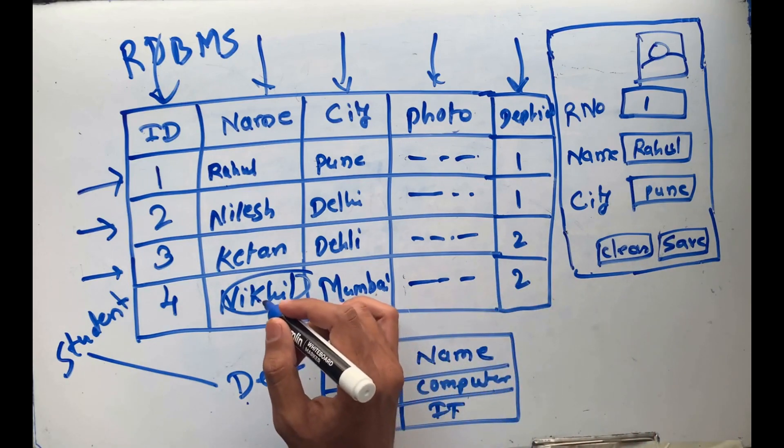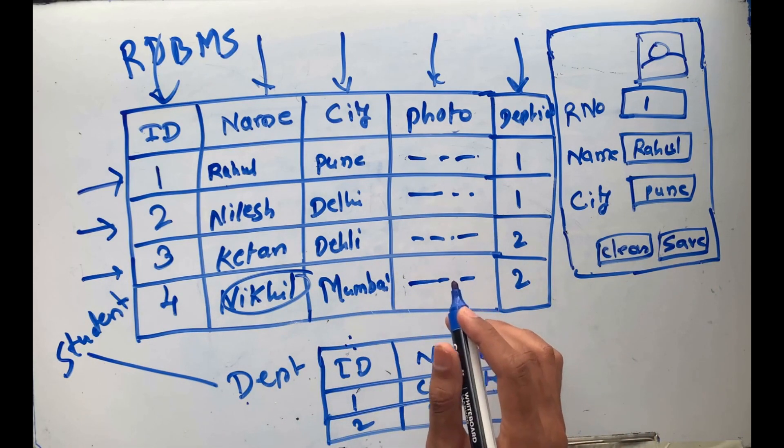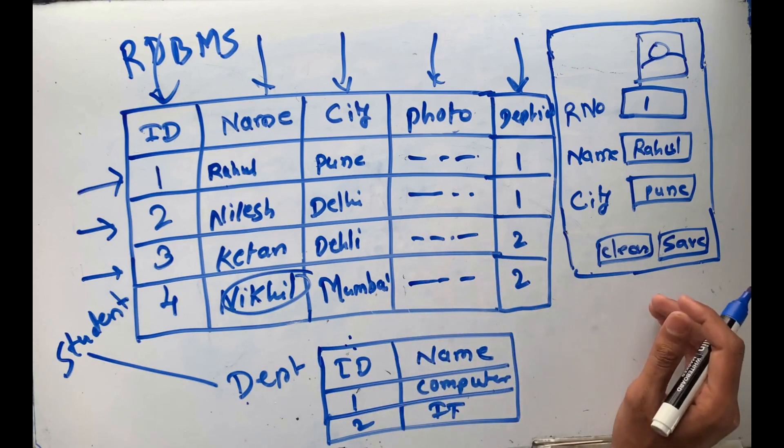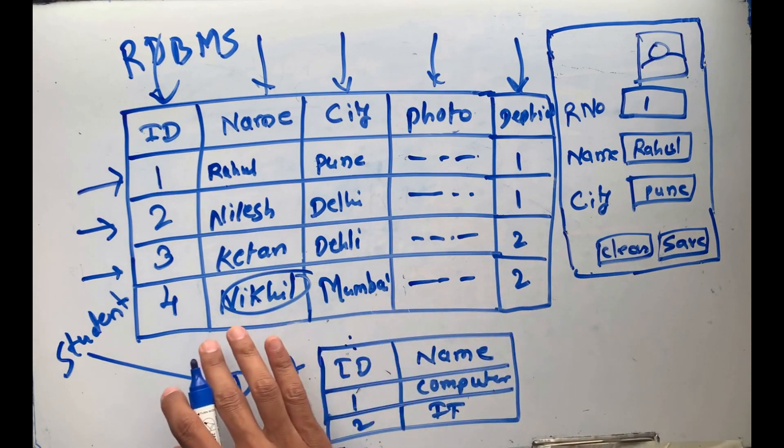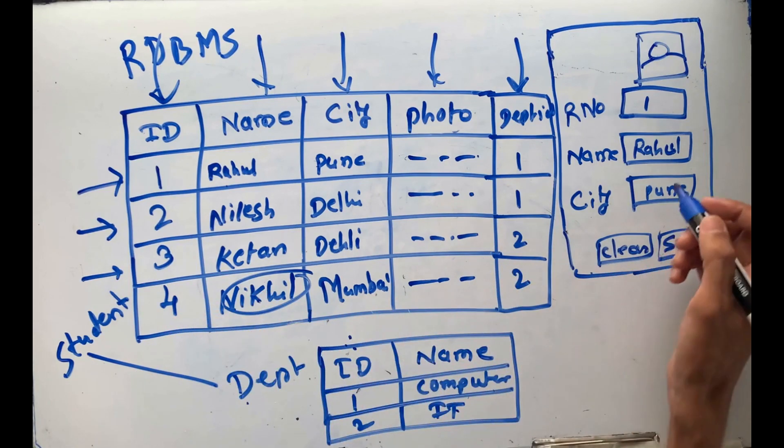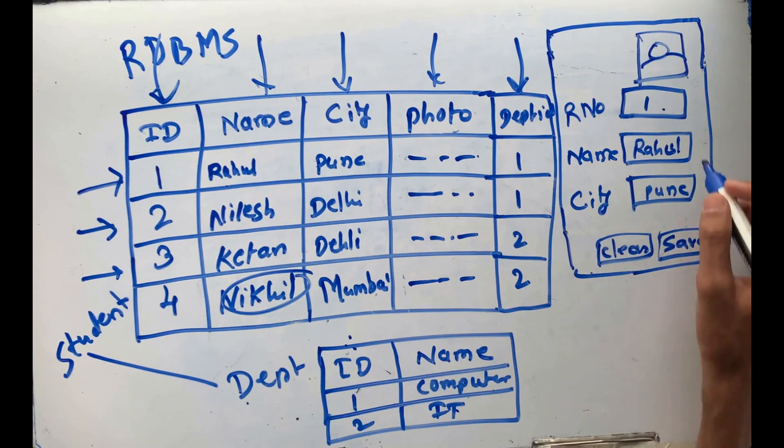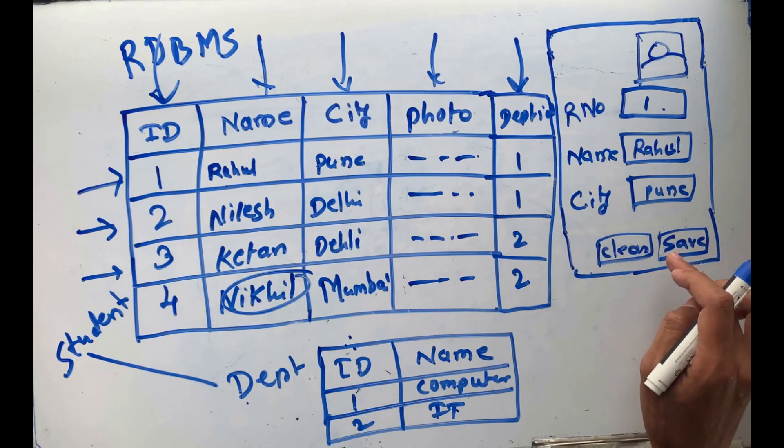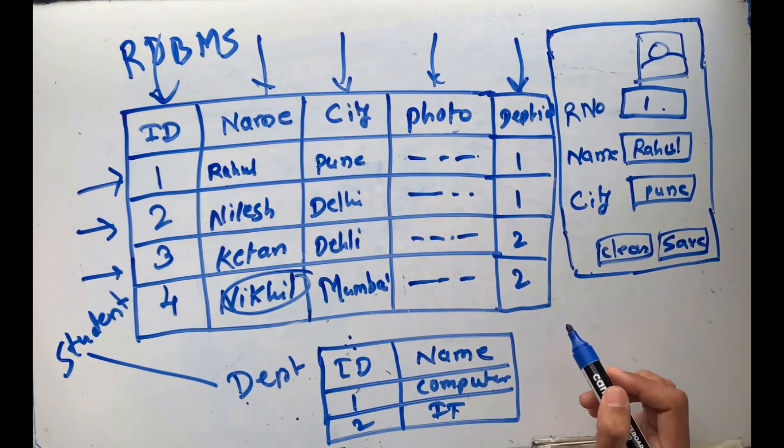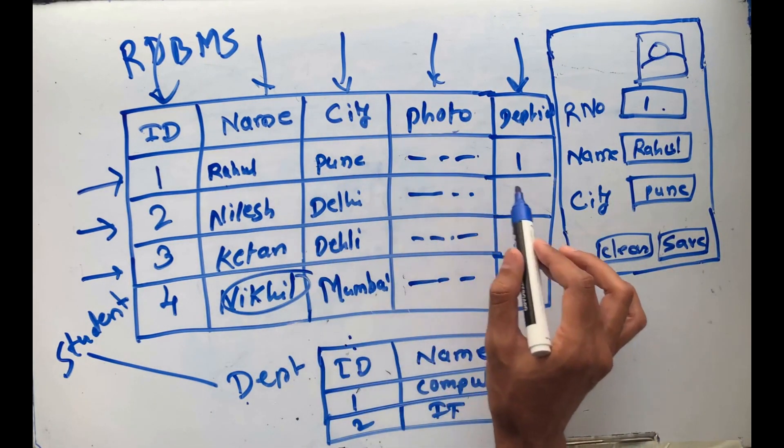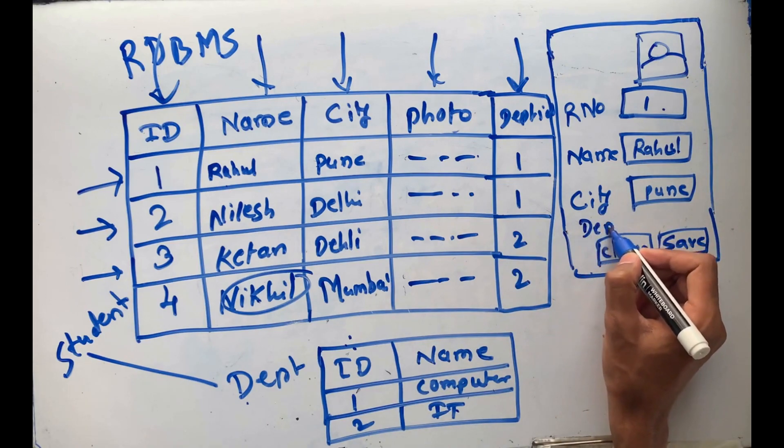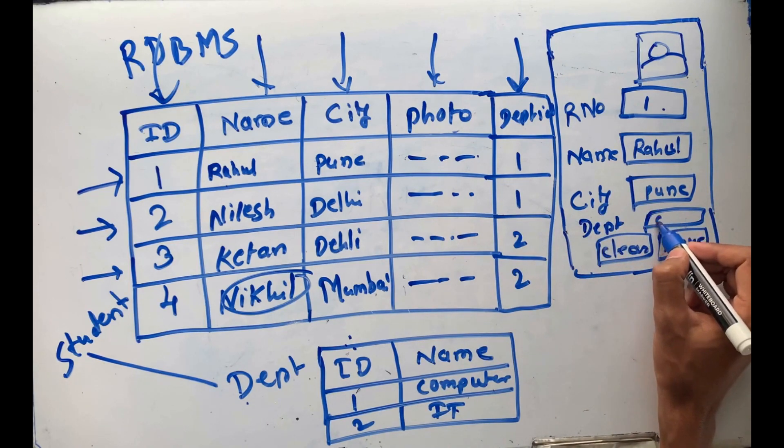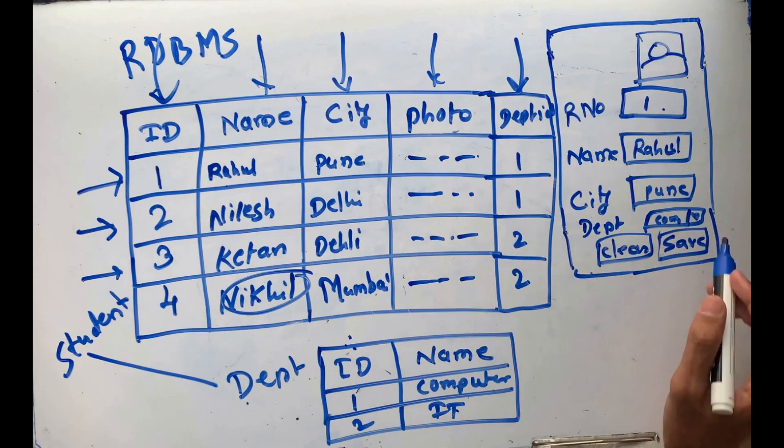We can do operations like DML operations. DML means Data Manipulation Language in SQL. We can do insert - suppose the name is Rahul, city is Pune. I upload the photo and click on save. Then data is going to be inserted from the application to the database: Rahul, Pune, photo, and its department. We have to choose which department he belongs to using a dropdown or combo box.